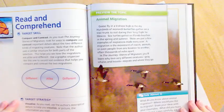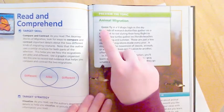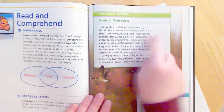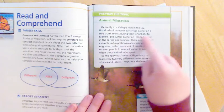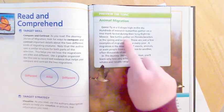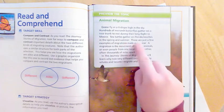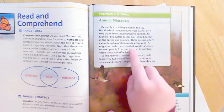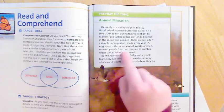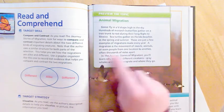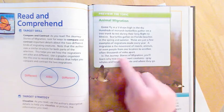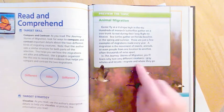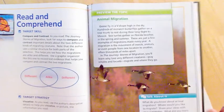You're going to open your book to page 237. We are learning about animal migration. It says geese fly in a V-shape high in the sky. Hundreds of monarch butterflies gather on a tree trunk to rest during their long flight to Mexico. Sea turtles gather on Florida beaches in the spring and summer. These are just a few examples of migrations made every year. A migration is the movement of insects, animals, or even people from one location to another, often thousands of miles apart. In The Journey Stories of Migration you'll learn why two very different creatures, gray whales and locusts, migrate and where they go.